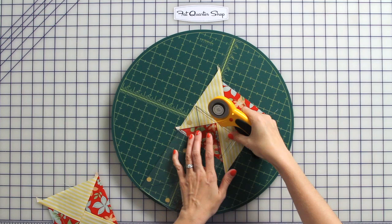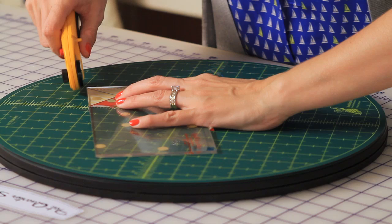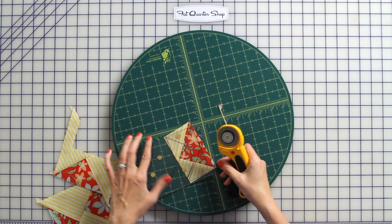And now you just turn your ruler around. Line up the very back of the ruler with the red line. So ta-da! You've got a perfect flying geese.